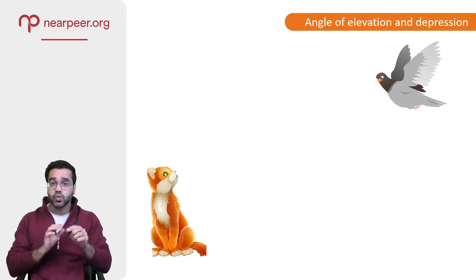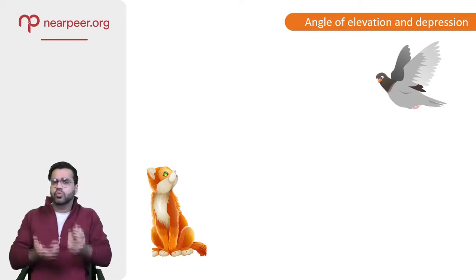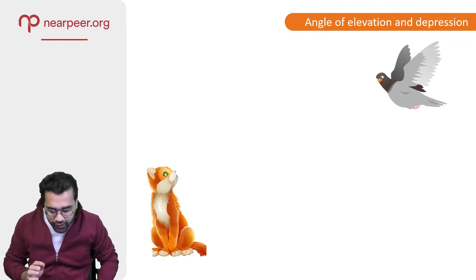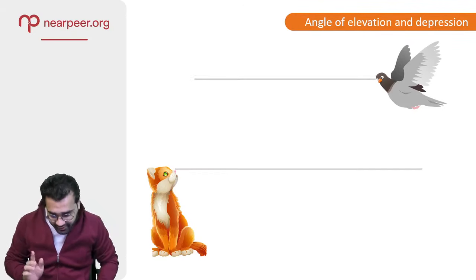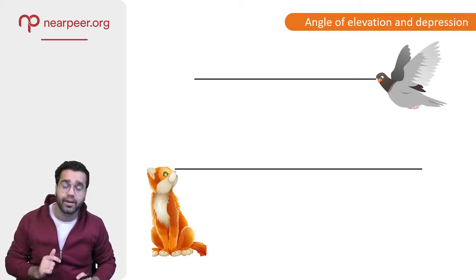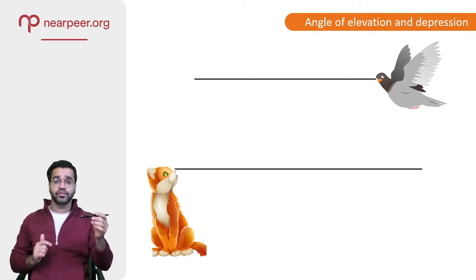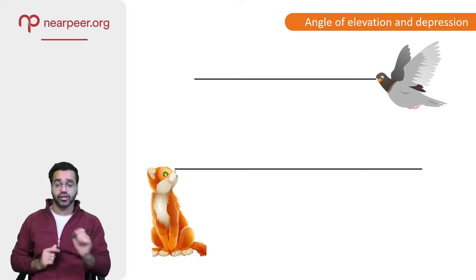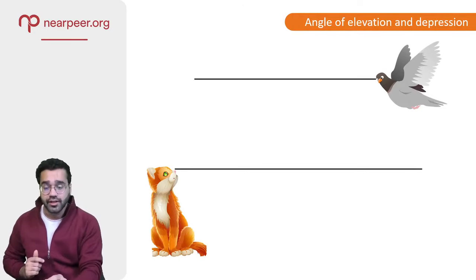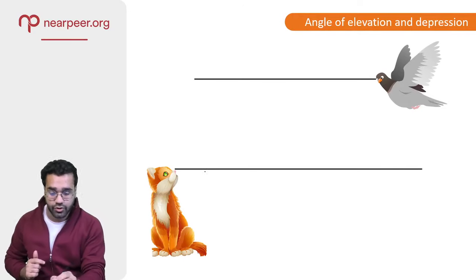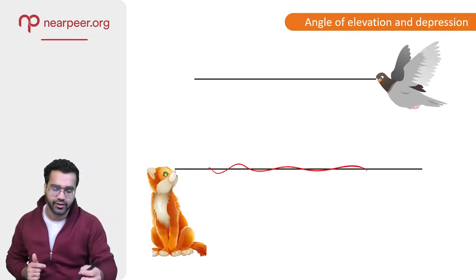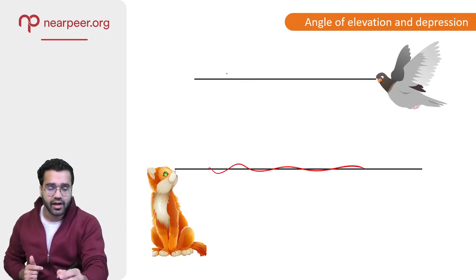So how do we measure that angle, or what do we even call those angles? We always measure these angles from the line of sight, and the line of sight is always a horizontal line, as you can see on the screen. The cat has a horizontal line of sight — I've just drawn a random red line on it — and the bird has a horizontal line of sight as well.